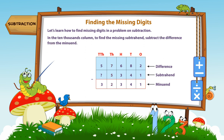In the tens thousands column, to find the missing subtrahend, subtract the difference from the minuend. 5 minus 3 is equal to 2.